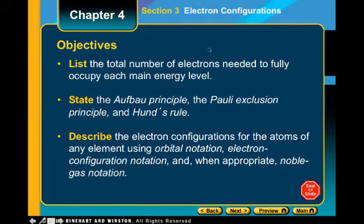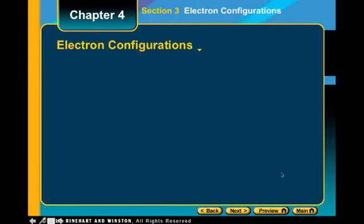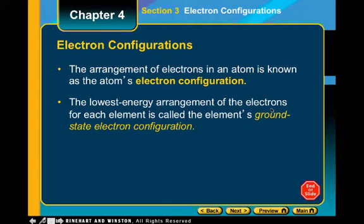We're going to look at the different rules needed, and we'll write three different types of configurations. The configuration we're looking at will always be the ground state. There is an excited state where electrons gain energy and move to a higher state, not the lowest energy possible. When we write out configurations, we're always going to write the ground state configuration.